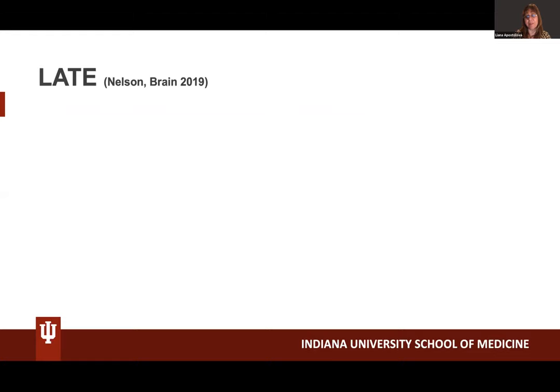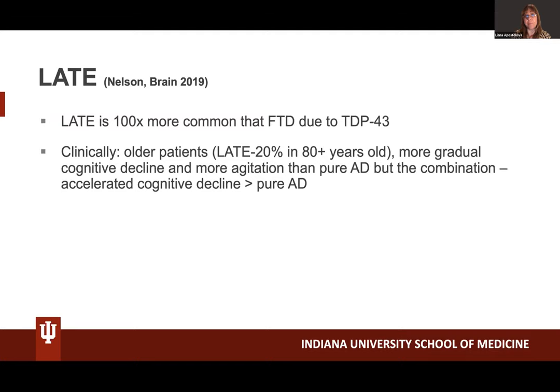Does that alone help us clinicians determine this is not just pure AD? In the absence of biomarkers, it's impossible. Pure AD was only seen in 19% of cases. In terms of LATE — a very famous paper by Pete Nelson — LATE is 100 times more common than FTD due to TDP-43. Clinical features relatively specific to LATE can kind of guide thinking, but not everybody with that constellation will have LATE.